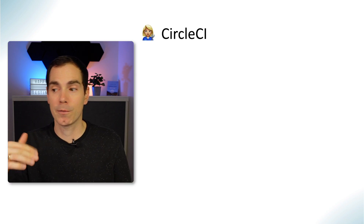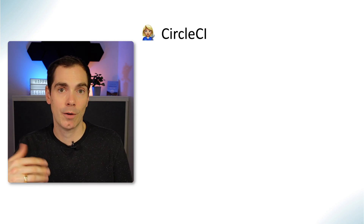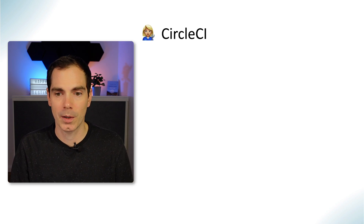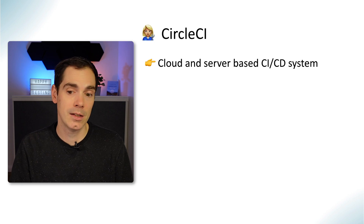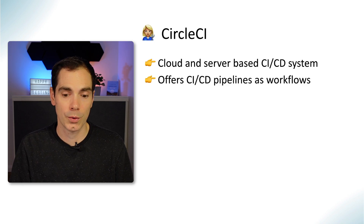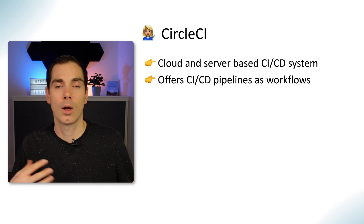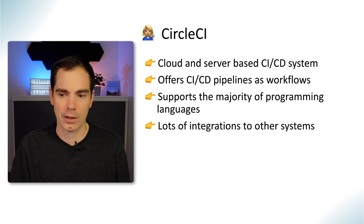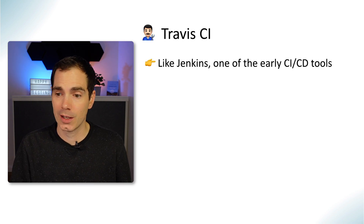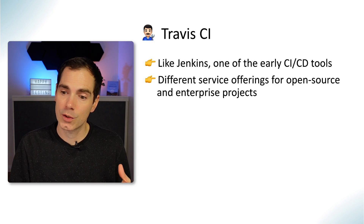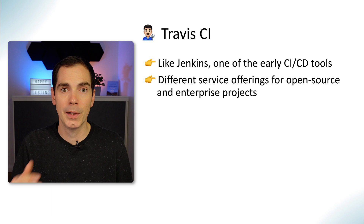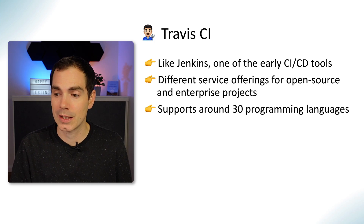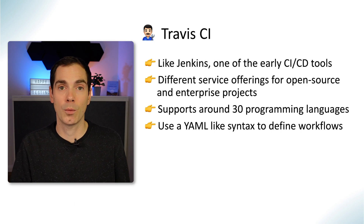CircleCI is a cloud or server-based CI/CD system. It offers pipelines as so-called workflows — you define your own workflows with a slightly different look and feel, but it's easy to do. It supports a maturity of programming languages and has lots of integrations for other systems. Travis CI is one of the early CI/CD systems, similar to Jenkins. It has different service offerings for open source and enterprise projects, supports up to 30 programming languages, and uses YAML-like syntax to define workflows.